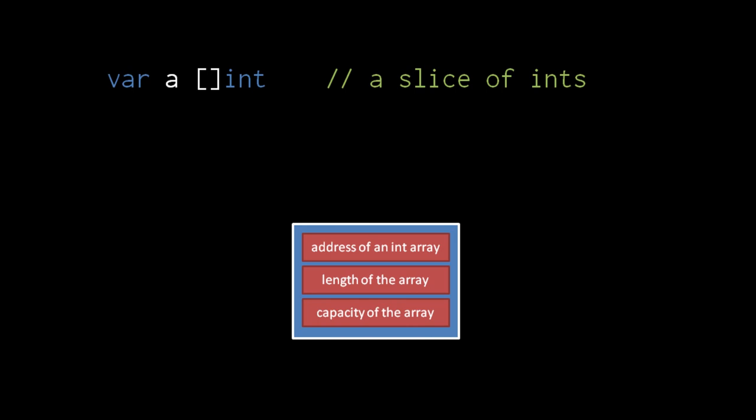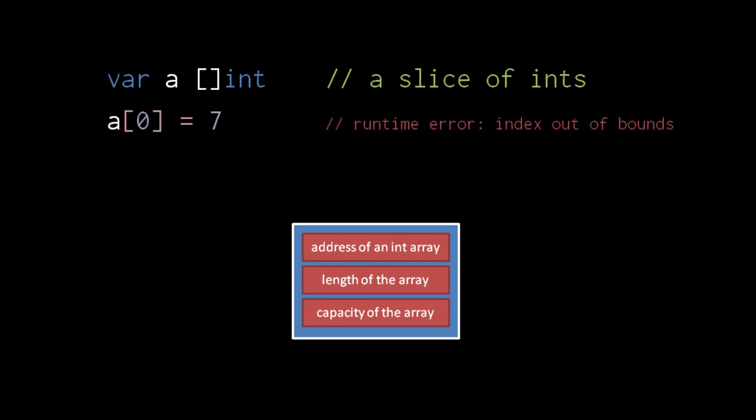A slice is a type that references arrays. Each slice value has three components: an address of some array, a number indicating length, and a number indicating capacity. The distinction between length and capacity we'll make clear shortly. When we create an uninitialized slice variable, the address, length, and capacity all start out zero. Attempting to access elements of the slice will result in runtime errors because the slice doesn't have any actual storage.